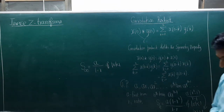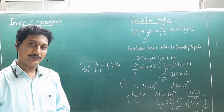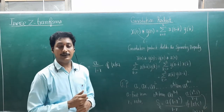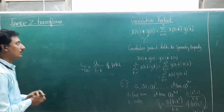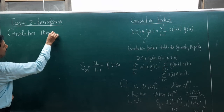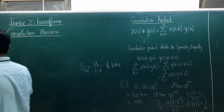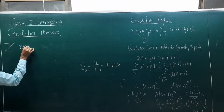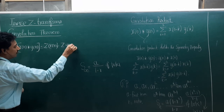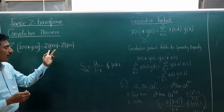Now, what is the use of this convolution product? With the help of the convolution product we are going to define a theorem called the convolution theorem. The convolution theorem states that the Z-transform of the convolution product of any two causal sequences is equal to the usual product of their Z-transforms.